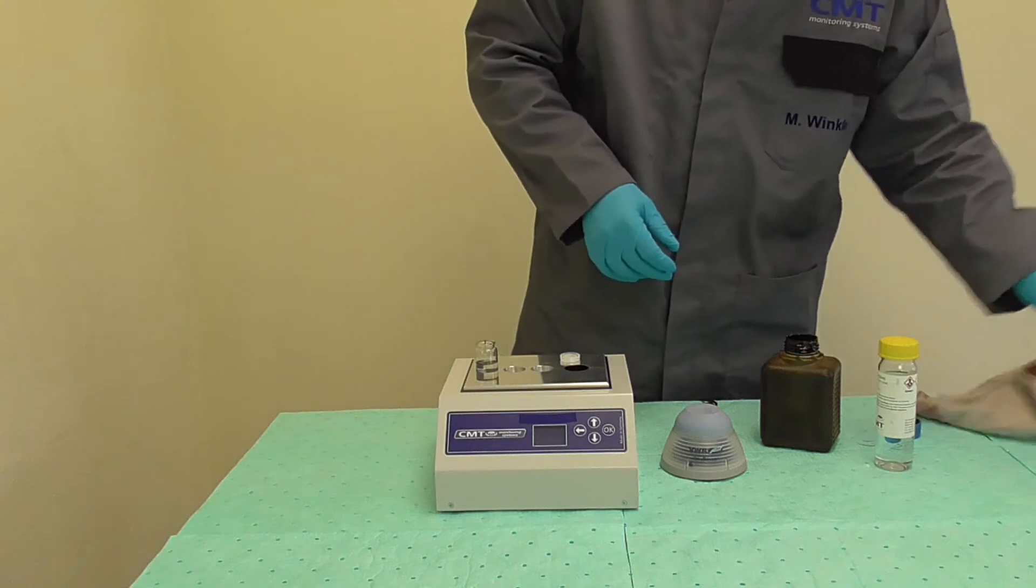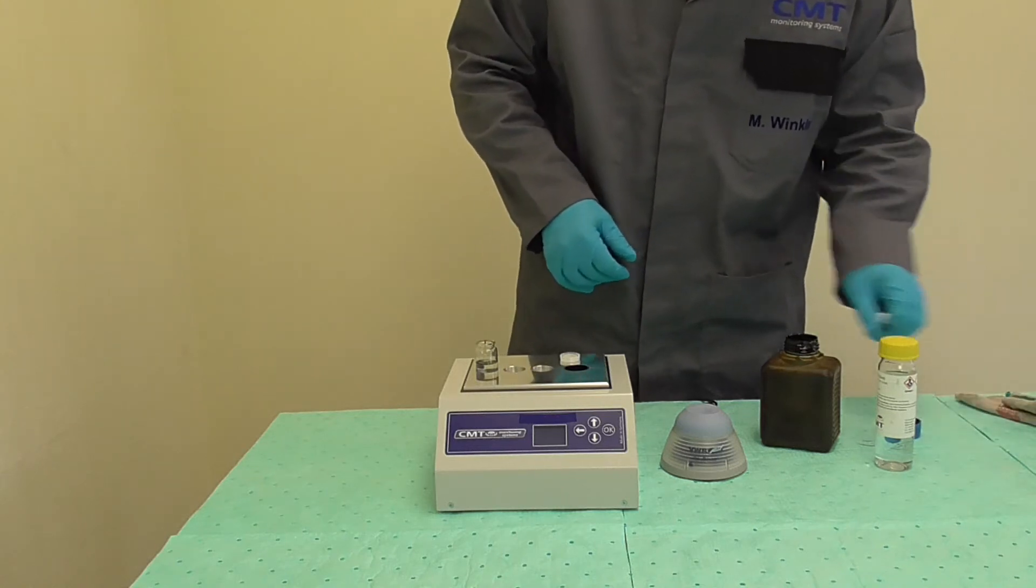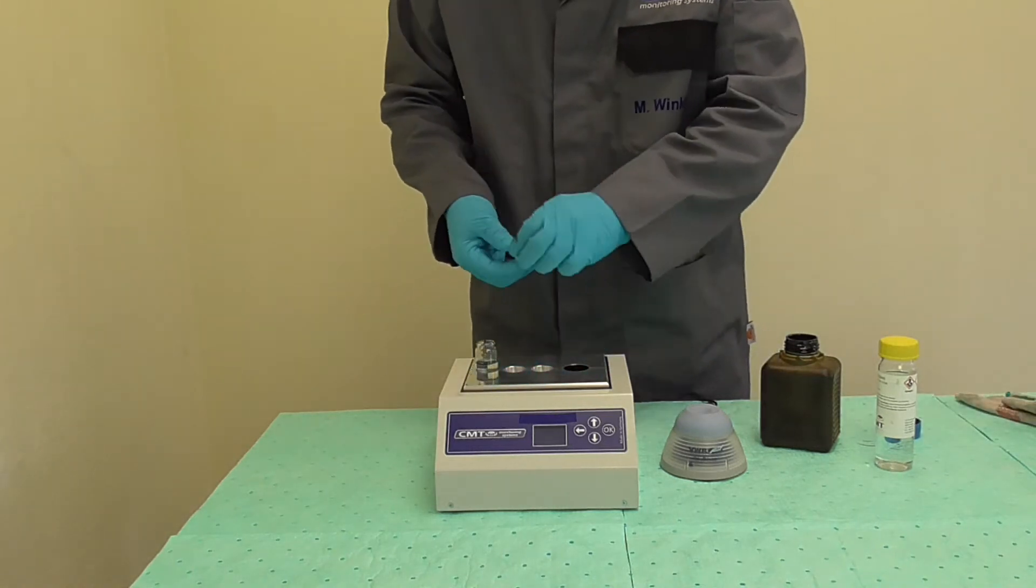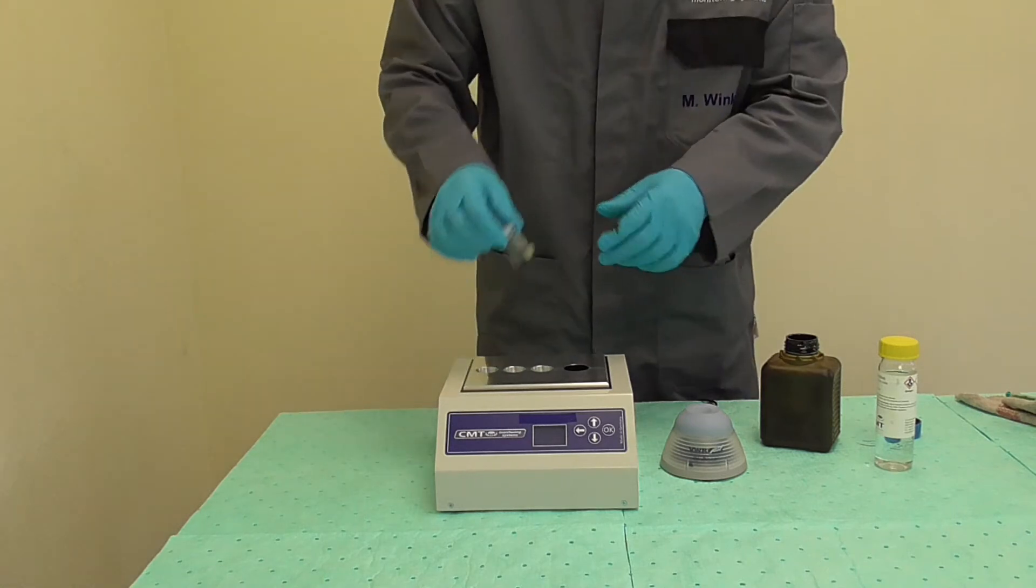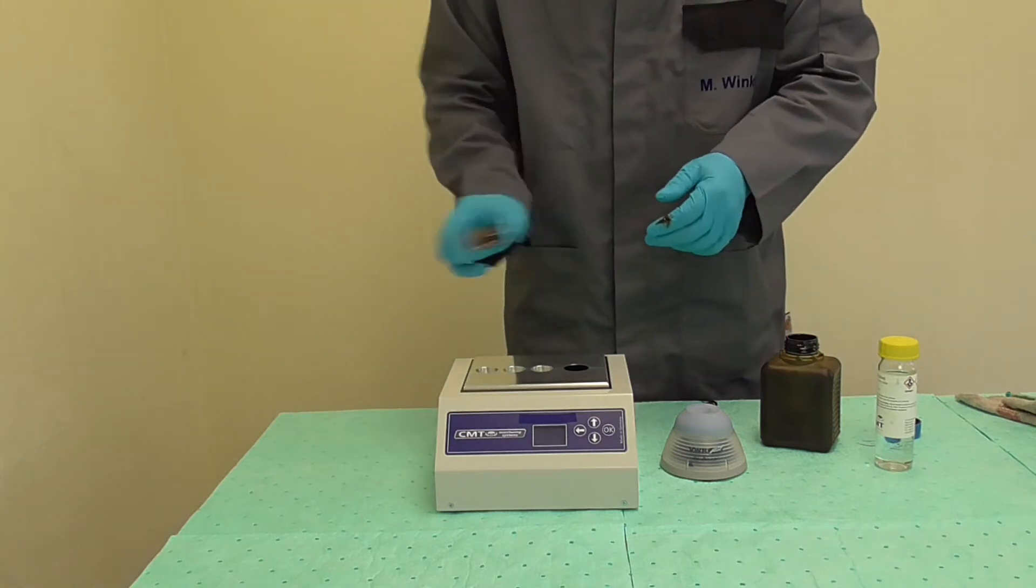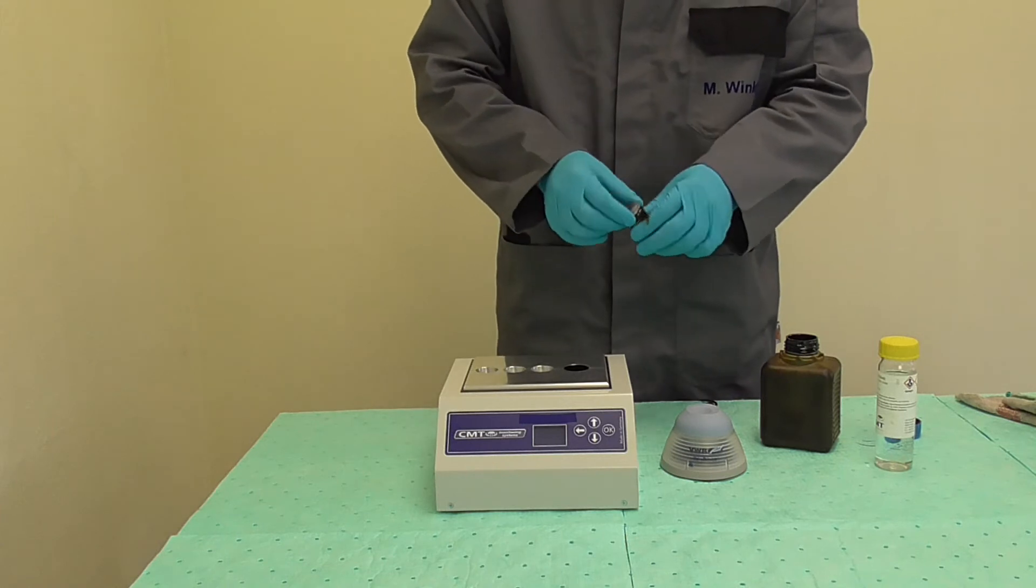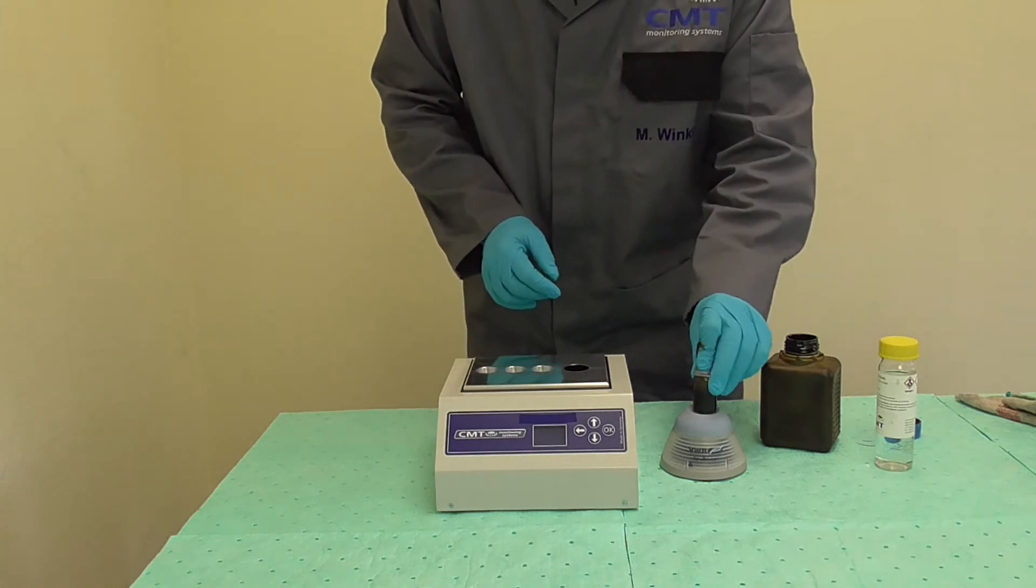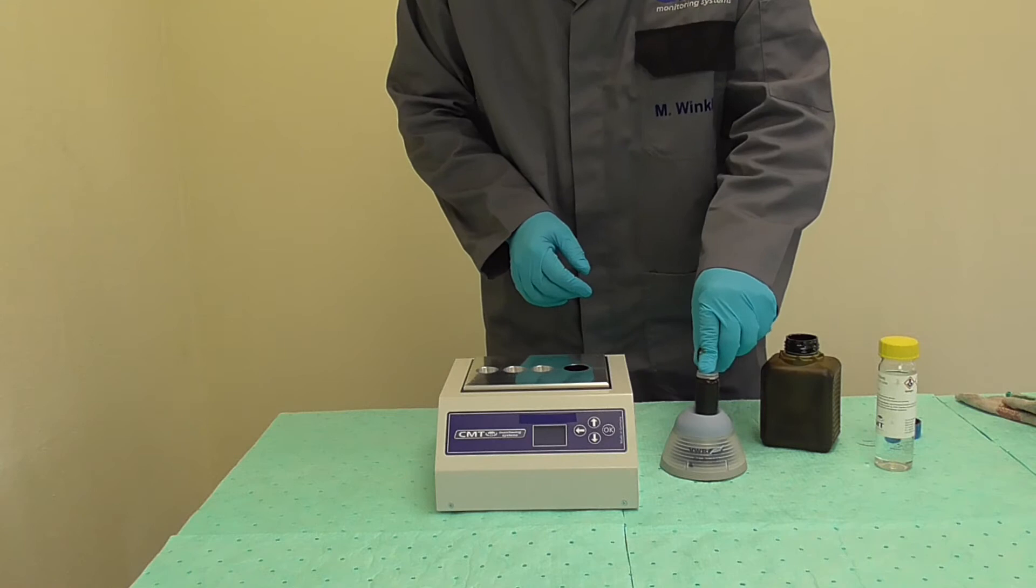Dispose of the one milliliter syringe after use. It can't be used again. Cap the vial and shake it a few times manually. Use the electric shaker to mix the content of the vial for a minimum of one minute.